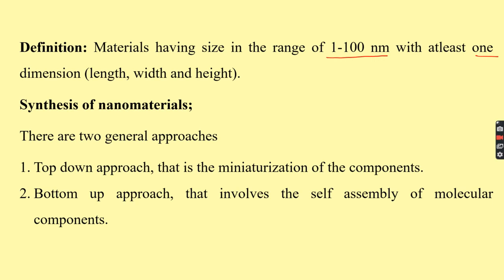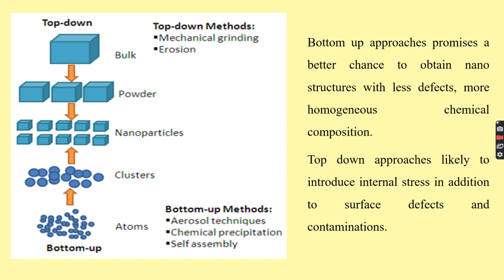In the top-down approach, there is miniaturization of components. A bulk component with size greater than 100 nanometers — perhaps in meters or centimeters — is broken down into a powder and finally made into a nanoscale component. Under the top-down approach, a milling process is typically used to make nanoparticles.